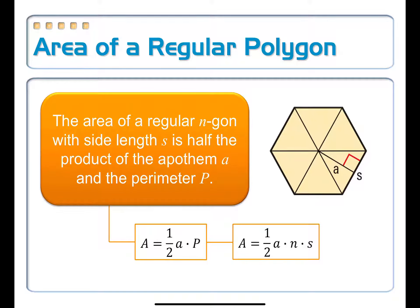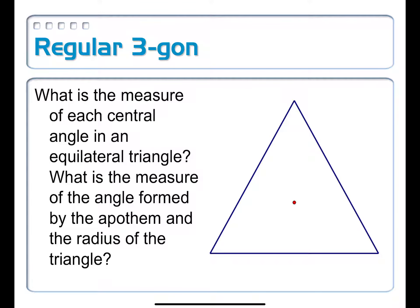In the rest of this video, we're going to look at individually some different types of n-gons — whether it has three sides, four sides, eight sides, whatever — to break down how this formula applies in each specific case, because not every single one of them works the same way. Let's start with a regular three-gon, which we ordinarily just call an equilateral triangle.